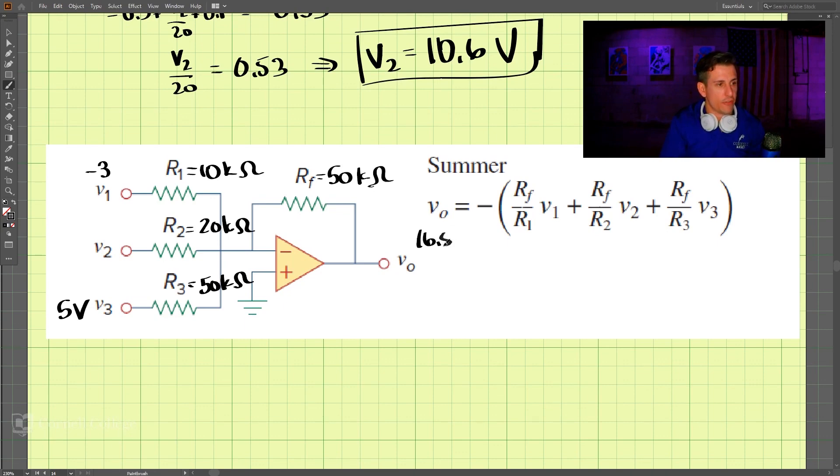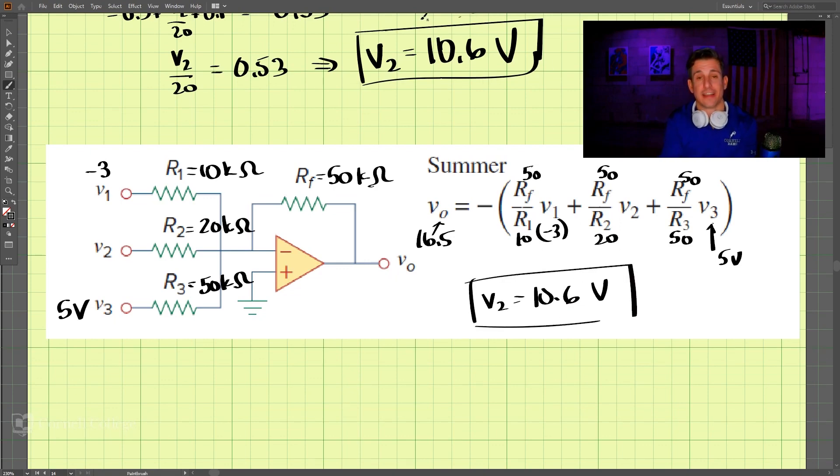So we could have solved this equation, 16.5 in here, we have 50, 50, and 50, and R1 is 10, and this is 20, and this is 50. And then lastly, we would put in negative 3 here, V2 we're solving for, and V3 is 5 volts. And we could solve this whole thing here for V2, and we would get the same answer, 10.6 volts. So whether you want to solve it like this or just use the equation...